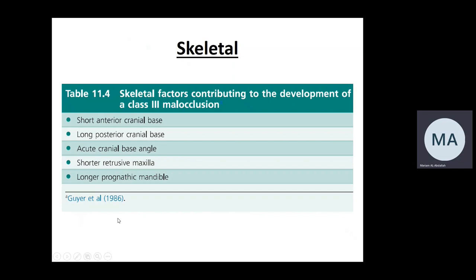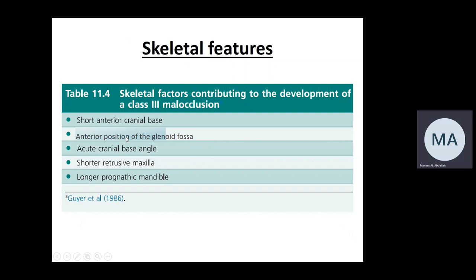The Witts analysis checks the position of A point and B point in relation to the functional occlusal plane. Common skeletal cephalometric features seen in class three malocclusion include: short anterior cranial base, acute cranial base angle, shorter/retrusive maxilla, and a longer/prognathic mandible. The second feature to note — rather than 'long posterior cranial base' — is an anteriorly positioned glenoid fossa, which carries the whole condyle and mandible anteriorly into a more prognathic position.